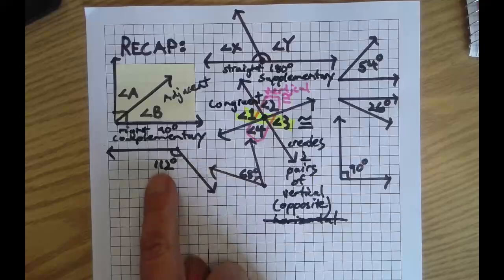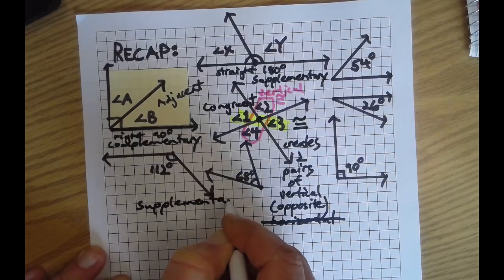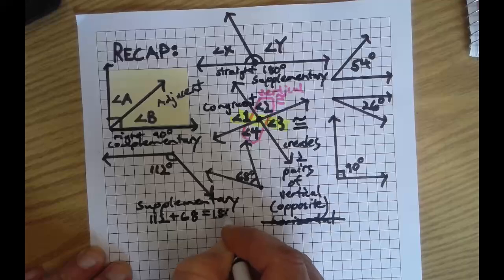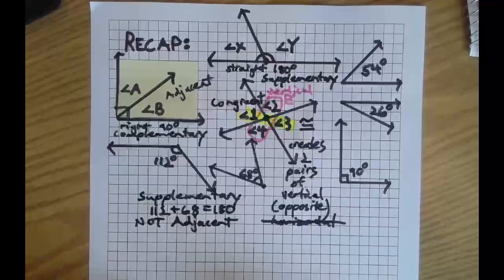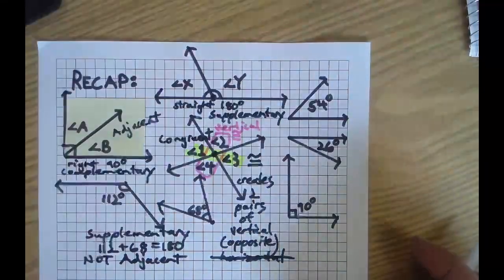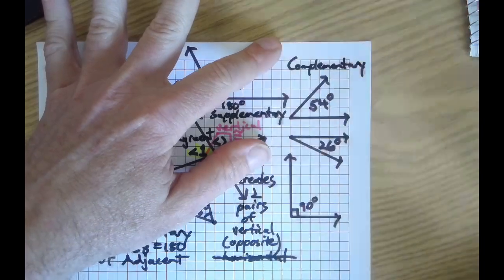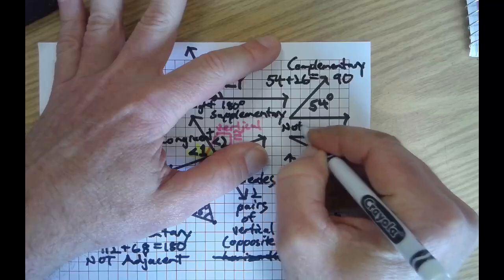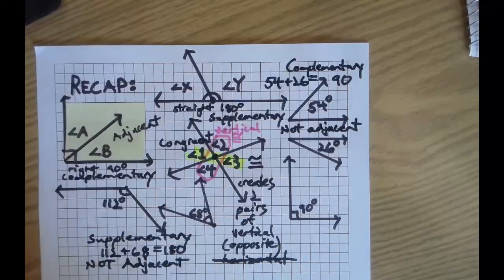And then down here, these two angles, this is an example of they are supplementary. This is just our recap. I hope you didn't miss all this stuff previously. I'm going kind of fast. They're supplementary because they add up to 180, but they are not adjacent. And they don't have to be adjacent to be supplementary.